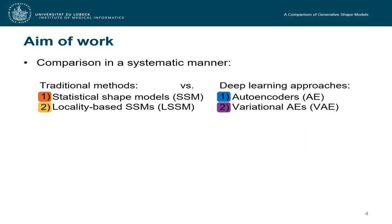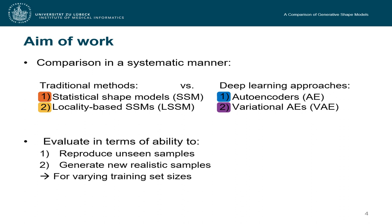Even though we know those properties, the literature lacks a concrete comparison of such shape models and this is the aim of our work to compare in a systematic manner two traditional methods versus two deep learning approaches and we compare them in terms of their ability to reproduce unseen samples and to generate new realistic samples. We do so for varying training set sizes to see how this affects the final results.